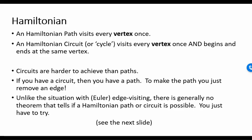Now let's look at Hamiltonian paths and circuits. Instead of being interested in covering edges, we're interested in visiting vertices. A Hamiltonian path visits every vertex once. A Hamiltonian circuit or cycle visits every vertex once and begins and ends at the same vertex. Circuits are harder to achieve than paths because you have to get back to your starting point. If you achieve a circuit, then you automatically have a path — just remove one of the edges. Unlike the Euler situation, there is generally no theorem that tells if a Hamiltonian path or circuit is possible. You just have to use guess and check.